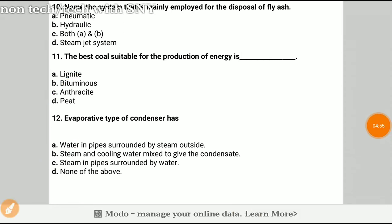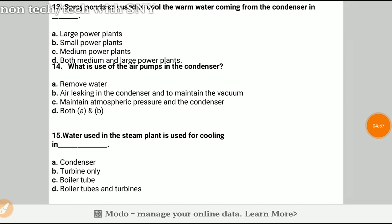Question 13: Spray ponds are used to cool the warmer water coming from the condenser in? The answer will be B, small power plant.